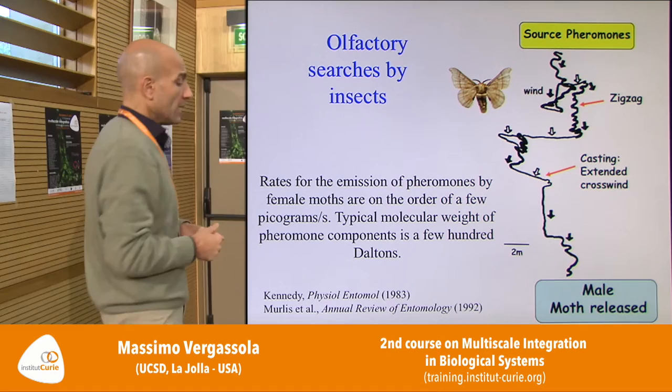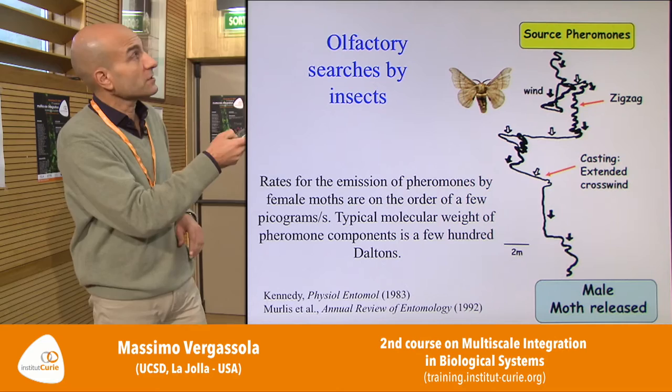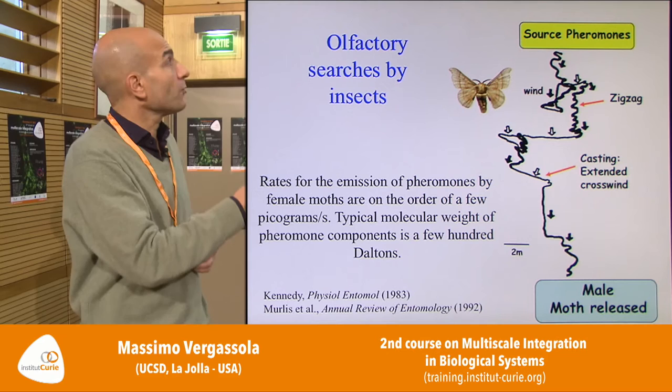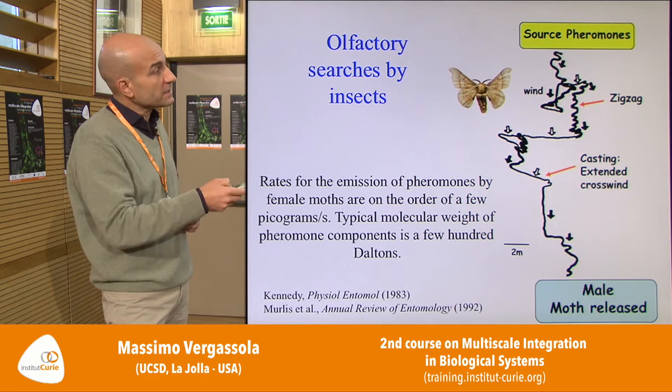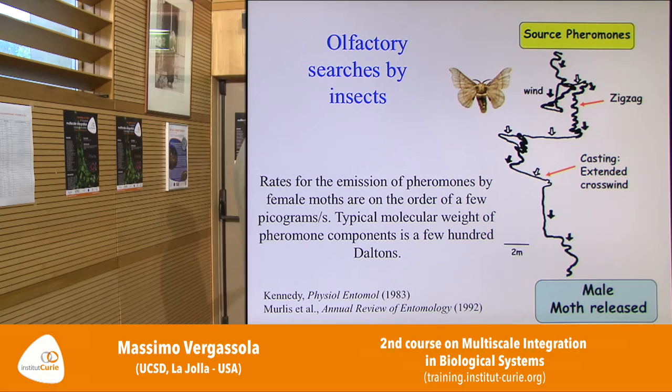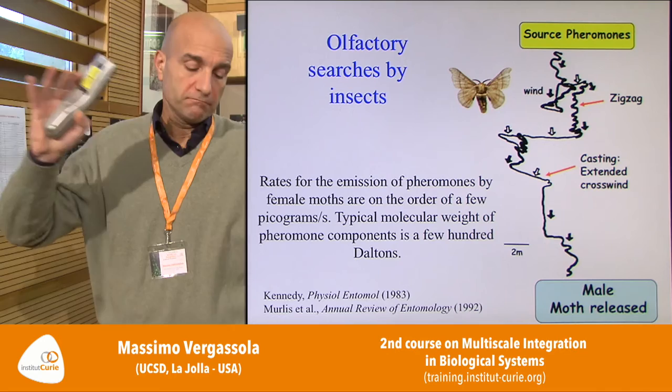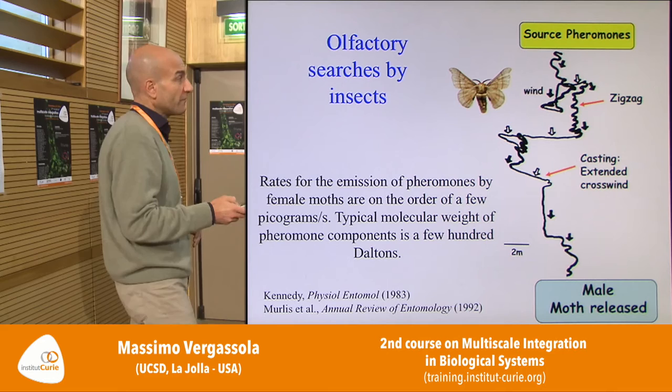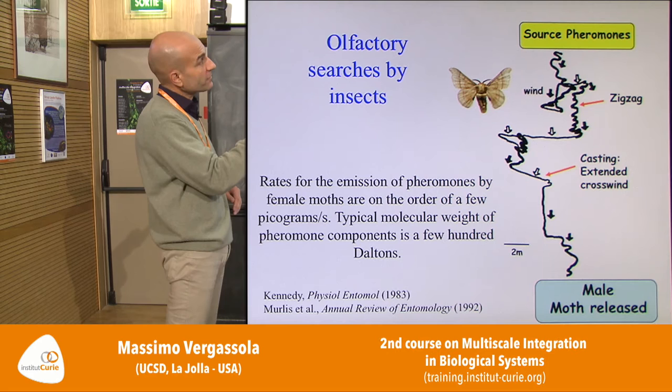These molecules are transported by the atmospheric wind. Males flying in the environment, even hundreds of meters away, can detect some of these molecules and get into a very stereotyped pattern. Entomologists have distinguished two phases in these patterns. One phase is called zigzag — in this phase the male moth moves consistently upwind. The arrows represent local wind direction.